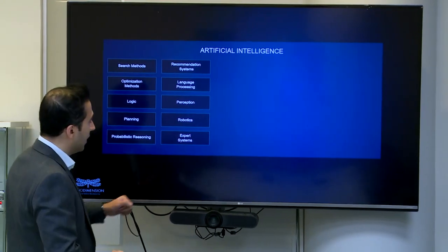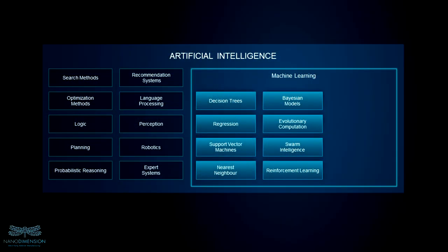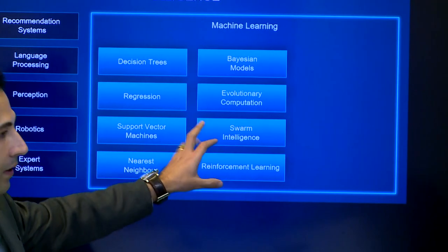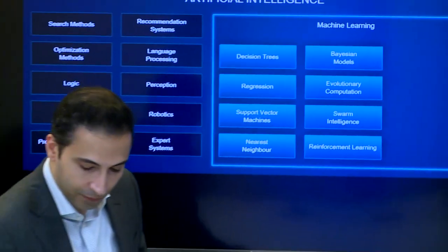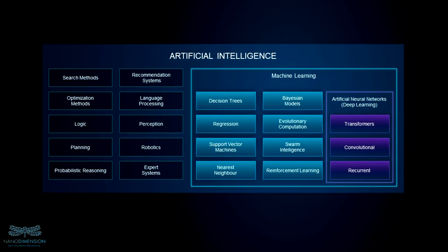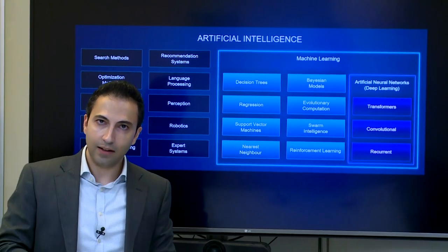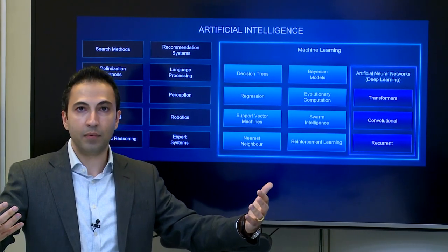Within artificial intelligence, we have multiple subfields. One is machine learning, where the machine learns by itself from data rather than being explicitly programmed. Within machine learning, we have many subfields based on different mathematical or statistical principles. One of those is neural networks, also known as deep neural networks or deep learning — so deep learning is a subfield of machine learning. All other fields, which we can call traditional machine learning, have major limitations that hindered development in the past few decades.